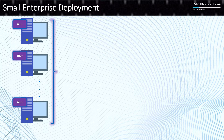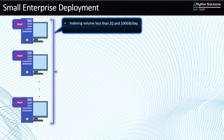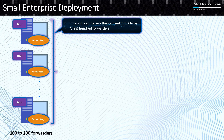For the small enterprise deployment, this one is a little bit bigger than the departmental or single instance deployment. The first characteristic: the indexing volume should be between 20 and 100 gigabytes per day. We saw that single instance is less than 20 gigs, so if you are having between 20 and 100 gigs per day, then you should start considering a small enterprise deployment.